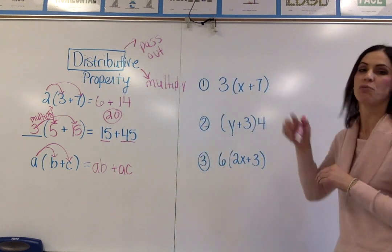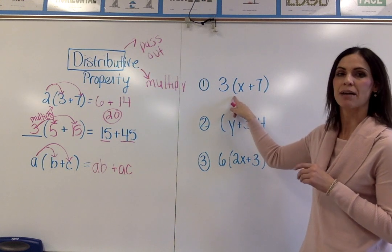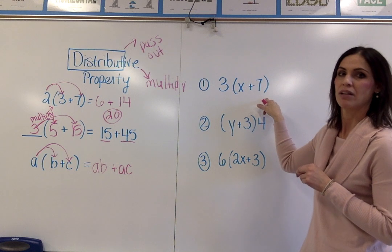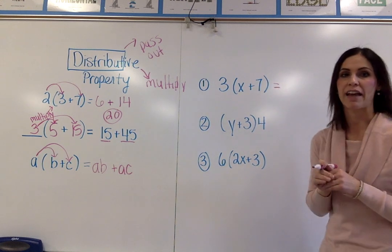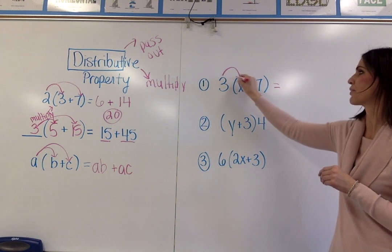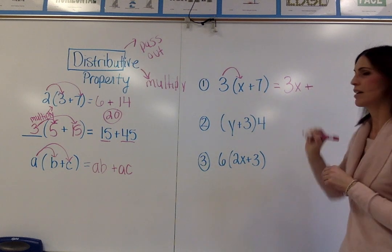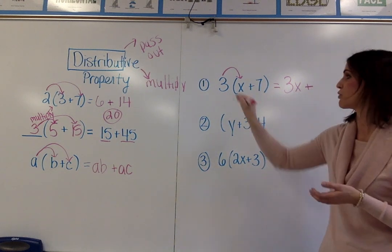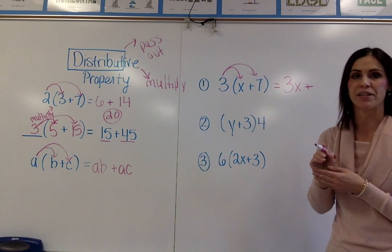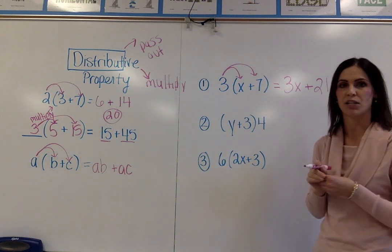Now you're going to write a few other examples that are not on your sheet. So example number one is 3 times the quantity X plus 7. So to make an equivalent expression to that, I am going to distribute. I'm going to multiply 3 times X, which is 3X plus, now I also have to distribute or pass out the 3 to the 7. So I'm going to multiply 3 times 7, which is 21. So these, again, are equivalent expressions.